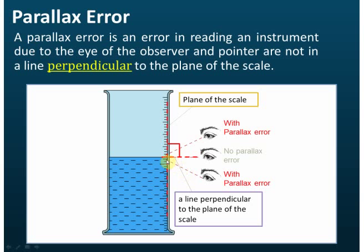Also, if the position of the eye is here, then the reading may be slightly lower than the actual reading. The difference is called the parallax error. Parallax error is caused by the position of the observer's eye which is not perpendicular to the plane of the scale.